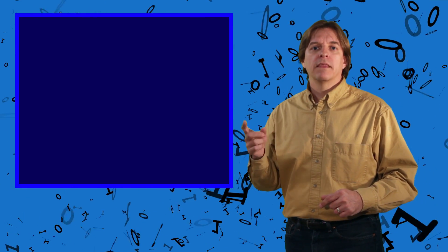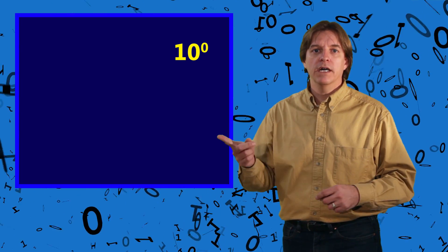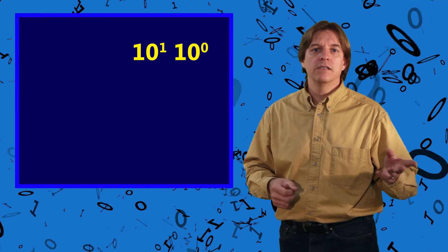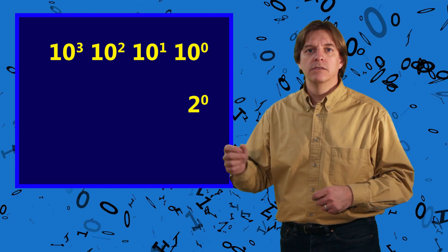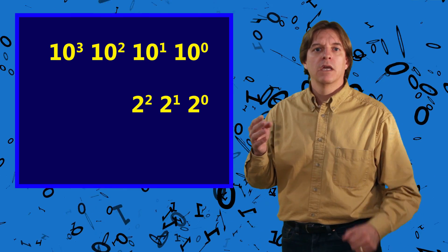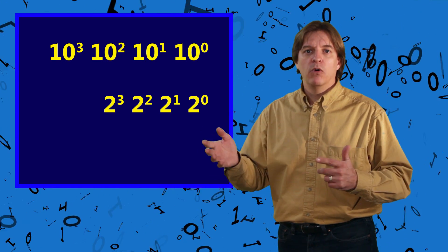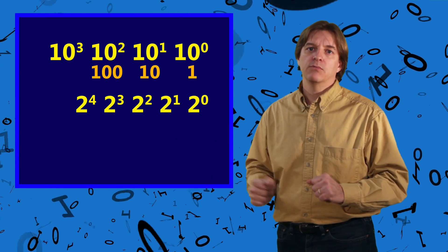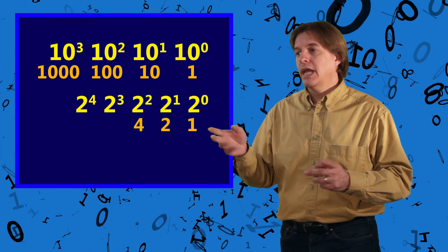Let's look again at the columns we learned about when we covered exponents. Just like in decimal, where column 1 was 10 to the 0, column 2 was 10 to the 1, and column 3 was 10 to the 2 and so on — in binary, column 1 is 2 to the 0, column 2 is 2 to the 1, and column 3 is 2 to the 2. This means the value of these columns, if we multiply them by 1, are 1, 2, 4, 8, and so forth in decimal.